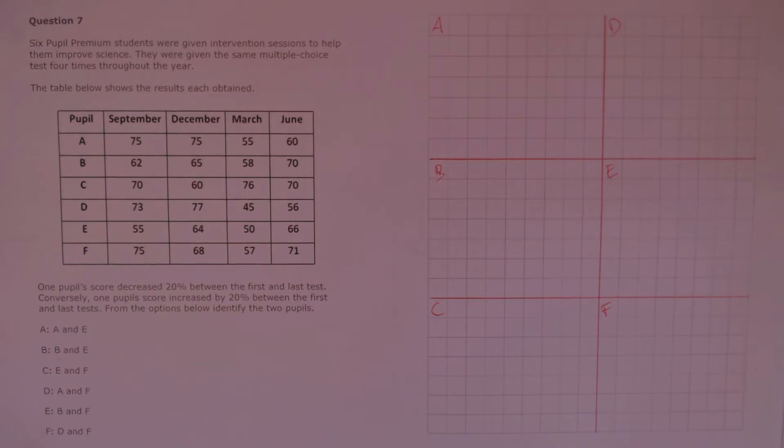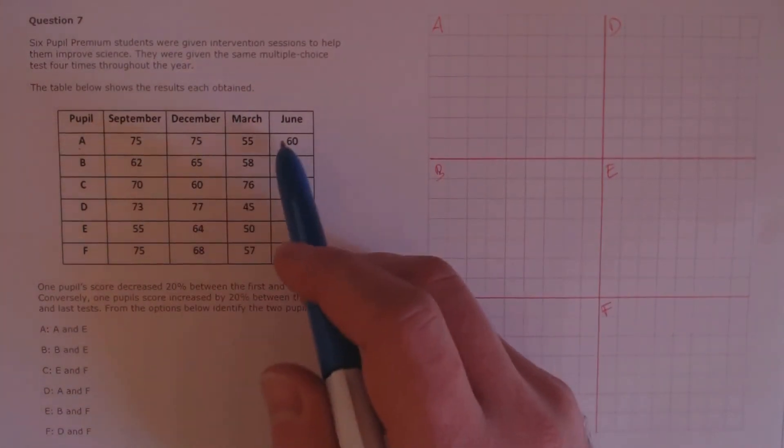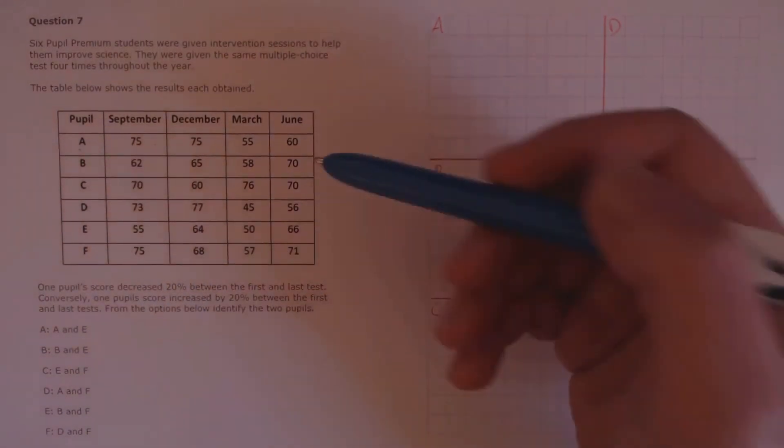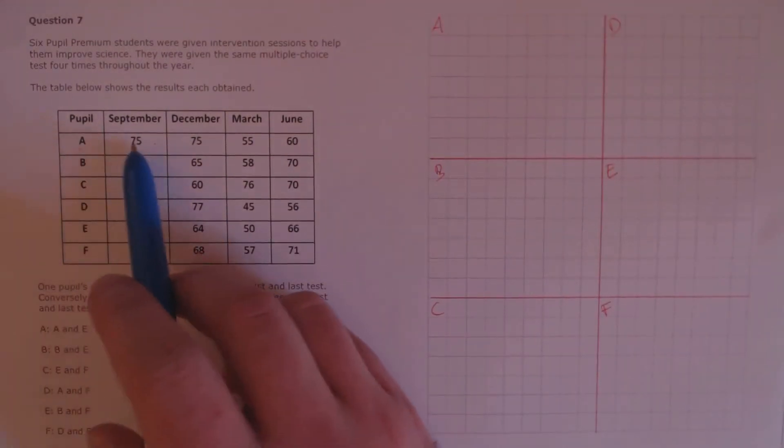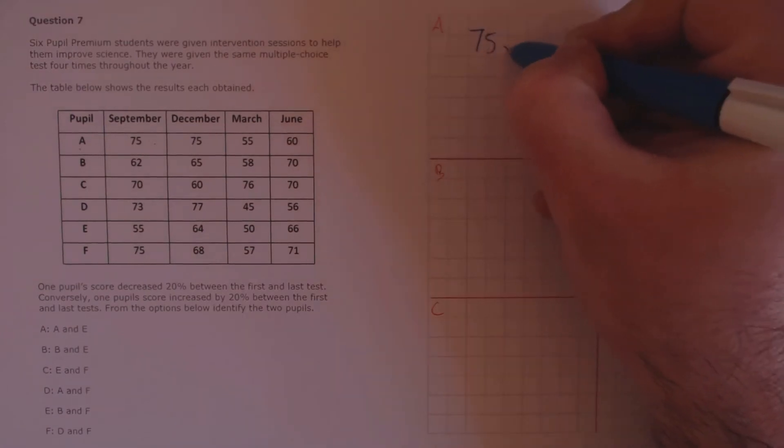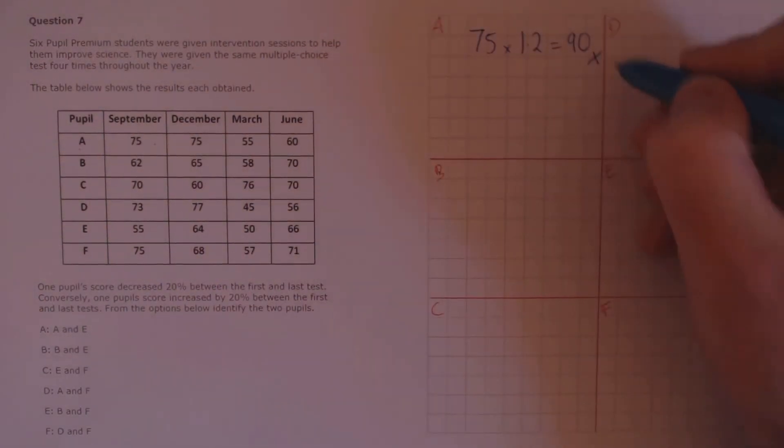Question 7. Six pupil premium students were given intervention sessions to help them improve science. They were given the same multiple choice test four times throughout the year. The table below shows the results each obtained. One pupil's score decreased 20% between the first and last test. Conversely, one pupil's score increased by 20% between the first and last test. From the options below, identify the two pupils. We're going to take each pupil in turn and increase their score from September by 20% to see if it matches that of June, and decrease their score from September by 20% to see if it matches June. Once we've gone through all the six students, we should have our answer. So, pupil A in September goes to 75, and we're going to increase by 20% by multiplying by 1.2. That's 90. It's not the same as the June value, so we'll put a cross there.